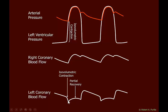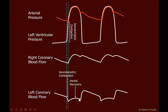Blood flow goes down due to compression. Once the aortic valve opens — I'll put some lines in here — this first line marks the point at which isovolumetric contraction begins and we see the drop in flow due to the squeeze. This next line marks the point at which the aortic valve opens and blood is ejected. We see a partial recovery because as blood leaves the left ventricle there is less pressure against the endocardium, relieving some compression. Once the aortic valve closes, we see a rapid increase in blood flow followed by the diastolic period.